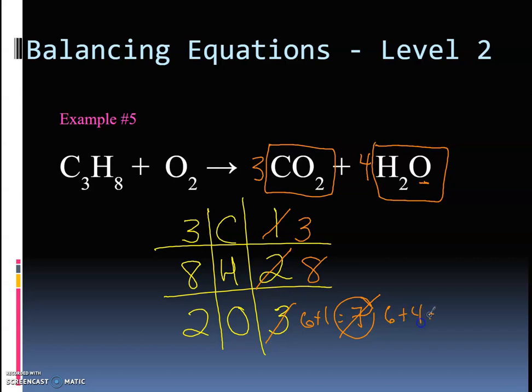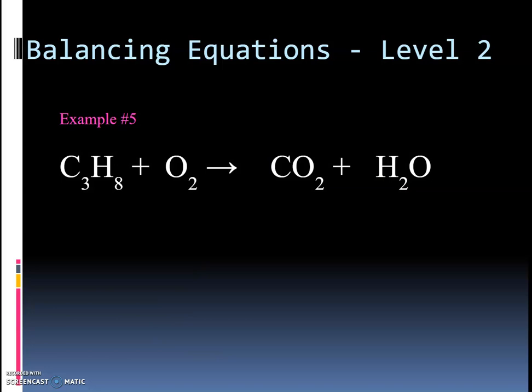I'll show that again. Three times two is six, four times one is four, six plus four gives us ten. So what should I put in front of the O2 here? Ten divided by two is five. And that gives me an even amount on each side. Alright, and that is our combustion of propane. C3H8 plus 5O2 gives us three CO2s and four H2Os.